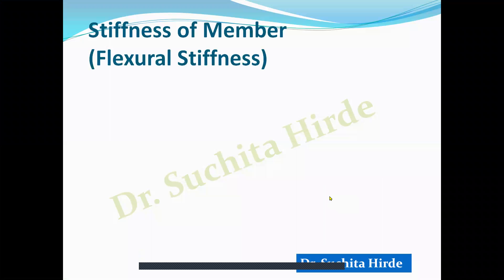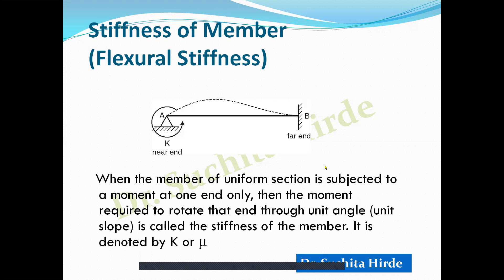To understand Stiffness Matrix Method, we must first know what is meant by stiffness of a member. Here we are studying the application of Stiffness Matrix Method for continuous beams and portal frames, so we will study Flexural Stiffness. When a member of uniform section is subjected to a moment at one end only, the moment required to rotate that end through a unit angle — that is, unit slope — is called stiffness.